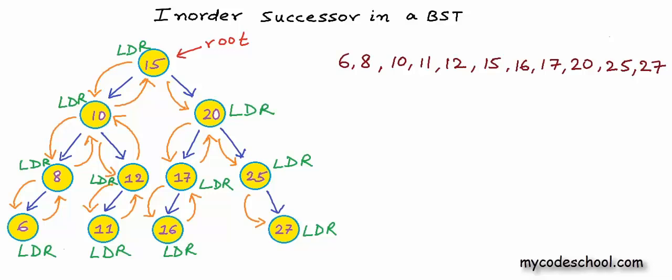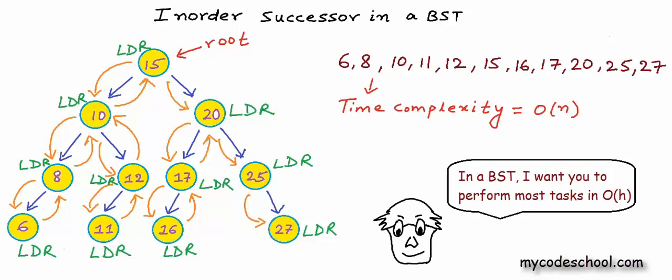So this is the inorder traversal of this binary search tree. Notice that we have printed the integers in sorted order. When we perform inorder traversal on a binary search tree, elements are visited in sorted order. Now the problem we want to solve is: given a value in the tree, we want to find its inorder successor. In a binary search tree, it would be the next higher value in the tree. But can't we just perform inorder traversal and figure out the successor? We can, but it will be expensive — O(n) — and we may want to do better.